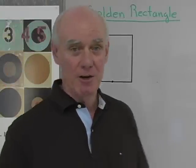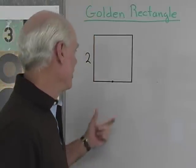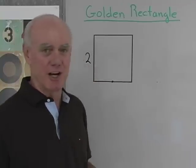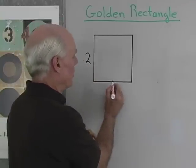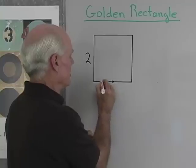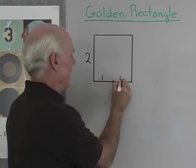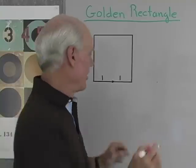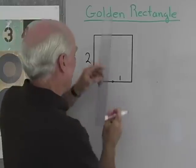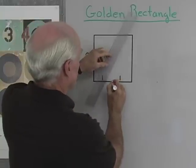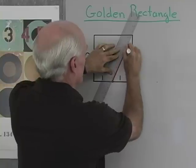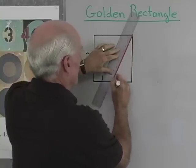I'm going to show you the golden rectangle. I'm going to start here with a square that's 2 on each side, so a square of side 2. I want to go to the midpoint of this side and bisect it here, so that length is 1 and that length is 1. Then I'm going to draw this diagonal in — from this midpoint up to that vertex of that square.